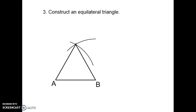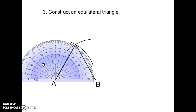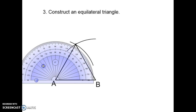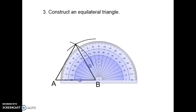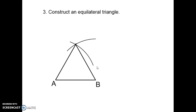If any of you are doubtful about this, you can always take a protractor and double check. If you put your protractor there you can see a perfect 60 degree angle at A, and sliding it over you can see a perfect 60 degree angle at B. So that's it — those are the three constructions you need for your GCSE Maths. Thank you for watching.